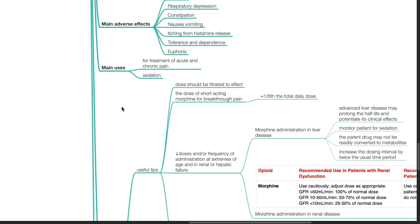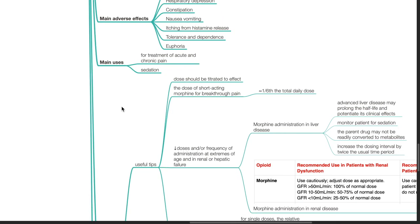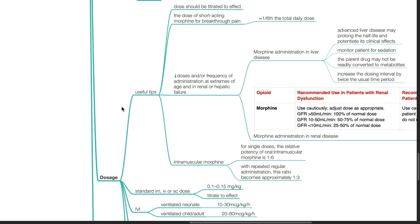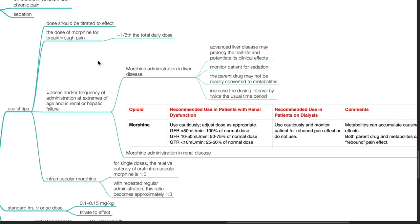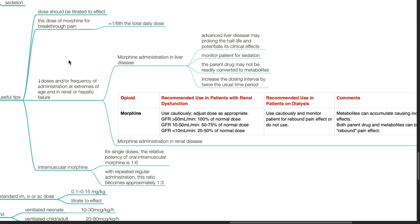Morphine is mainly used for treatment of acute and chronic pain and for sedation. Dosage. The dose should be titrated to effect. The dose for morphine for breakthrough pain is about one-sixth of the total daily dose.